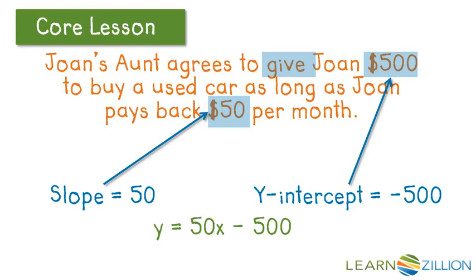The equation we're going to build: we know the slope, we know the y-intercept, we use our y equals mx plus b formula. Replacing m and b, we have y equals 50x minus 500.